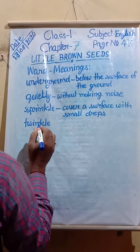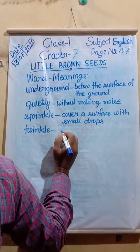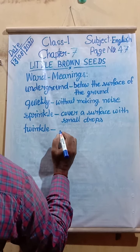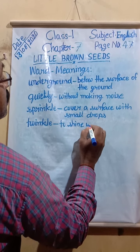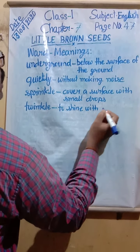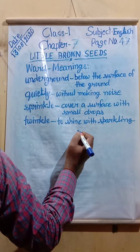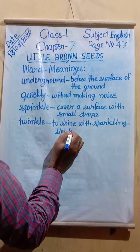'Twinkle' — T, W, I, N, K, L, E — means to shine with a sparkling light.